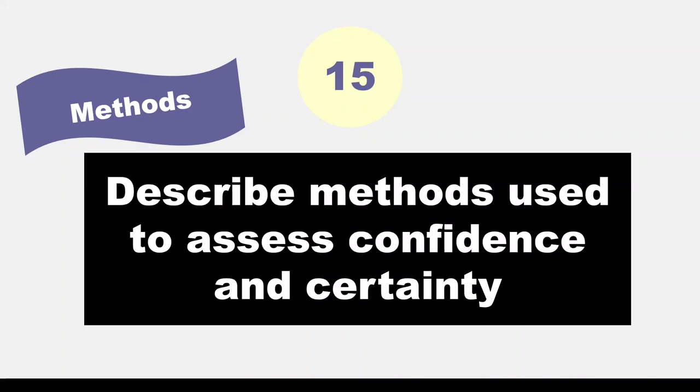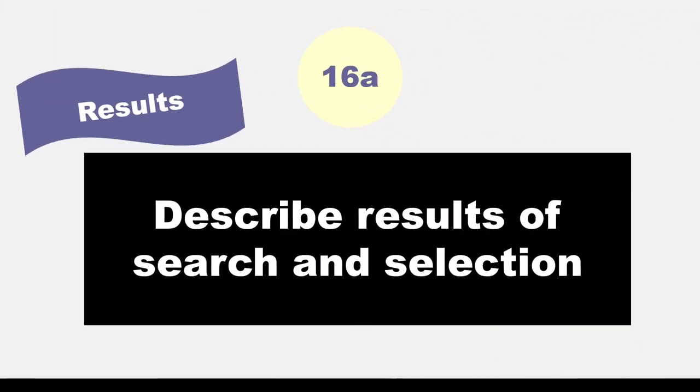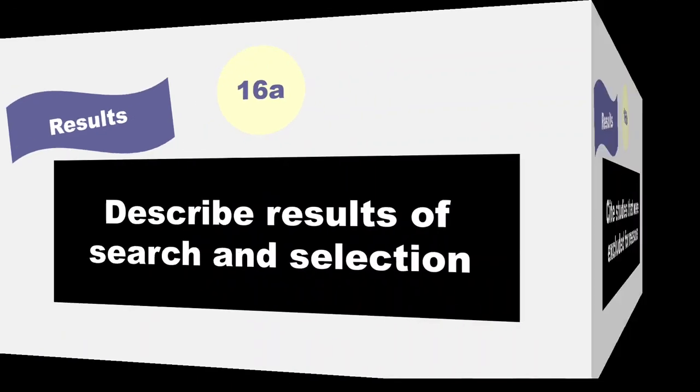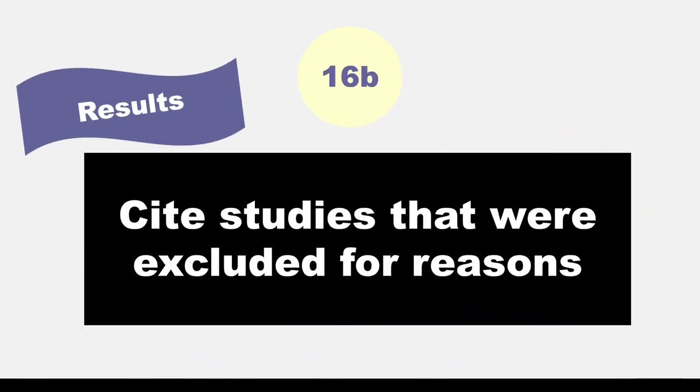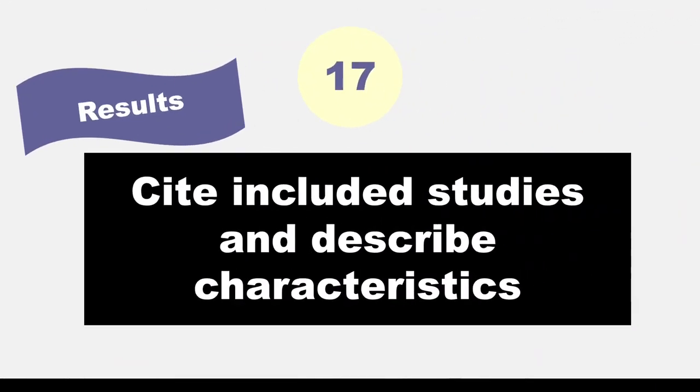Now we are in the section called results. Item 16A, describe the results of the search and selection process, from the number of records identified in the search to the number of studies included in the review. This is where you can use the PRISMA flow diagram that I mentioned in the beginning of the video. Item 16B, cite studies that might appear to meet the inclusion criteria but which were excluded and explain why they were excluded. Item 17, cite each included study and present its characteristics.